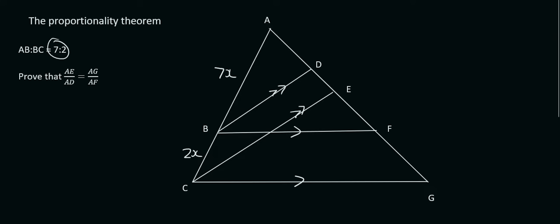The question says prove that AE over AD is equal to AG over AF. But first let's identify triangles.